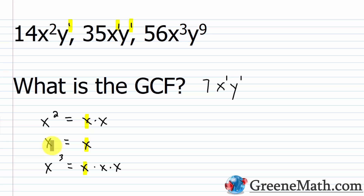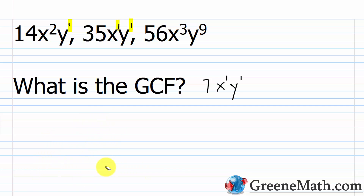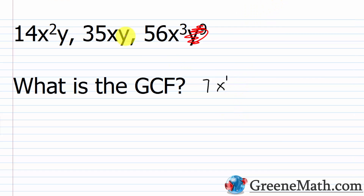Again, two questions to ask yourself: is the variable present in each of the terms, and what is the smallest exponent on the variable? If we changed this problem so that the middle term did not have a y, then y would get removed from the GCF because it's not present in each one — it's not common to everything, so it doesn't go in. But that's not the situation we have, so our GCF here for these three terms is going to be 7xy.